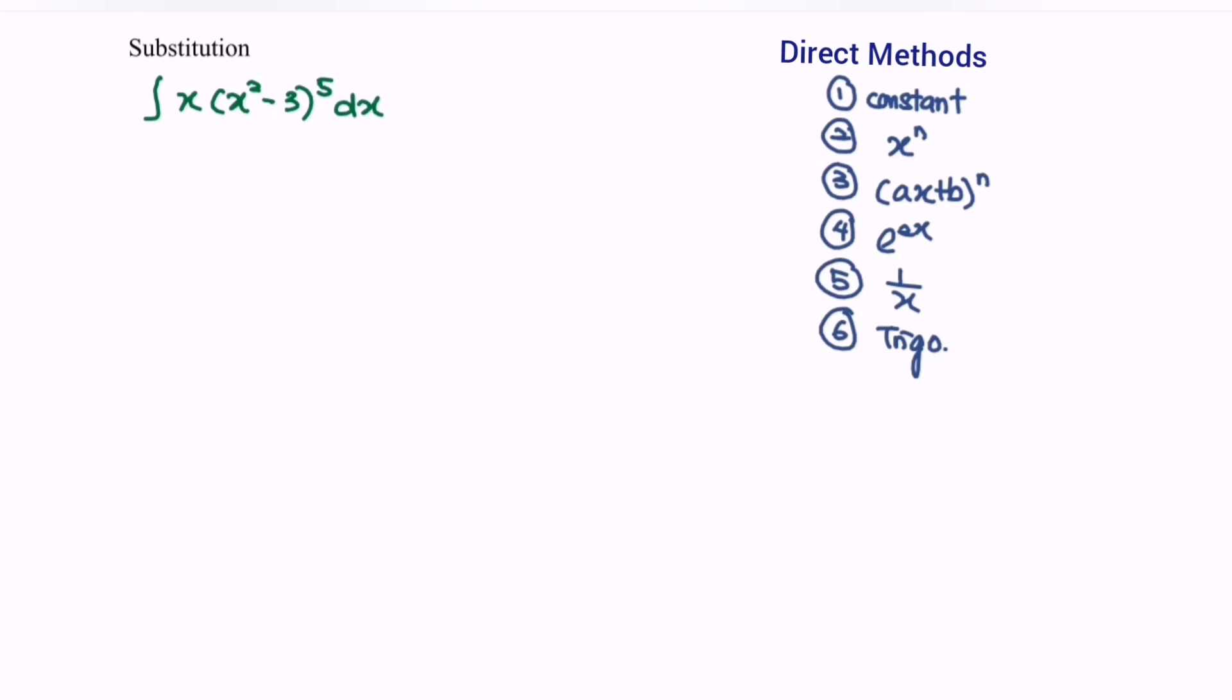The situations are: constant, x to the power of n, and (ax+b) to the power of n. We notice that number one until number six, there is nothing that we can match the situation. The suggestion is we could expand the situation, but referring to the power, it is very time-consuming if we expand. Meaning that we cannot use the direct method in this case, so now we are going to use the substitution method.